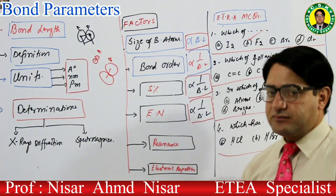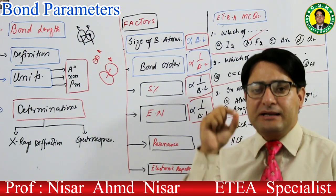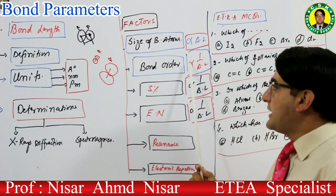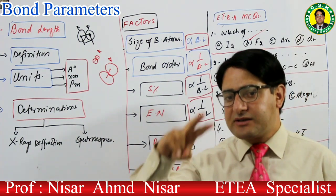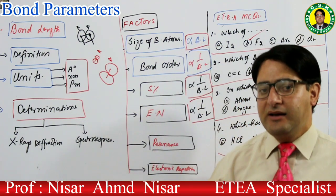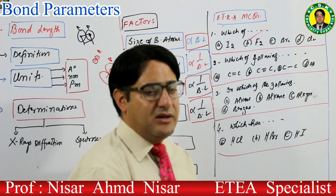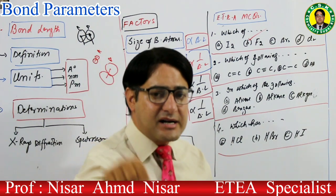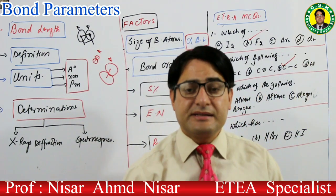دوسرے factor پہ بات کرتا ہوں — bond order۔ Bond order کا مطلب ہے number of bonds between two atoms، اسے bond multiplicity بھی کہتے ہیں۔ Bond order کے ساتھ bond length کا inverse relation ہے — bond order زیادہ ہوگا تو bond length کم ہوگی۔ Carbon-carbon single bond کا bond order سب سے کم ہے تو اس کی bond length سب سے زیادہ ہوگی۔